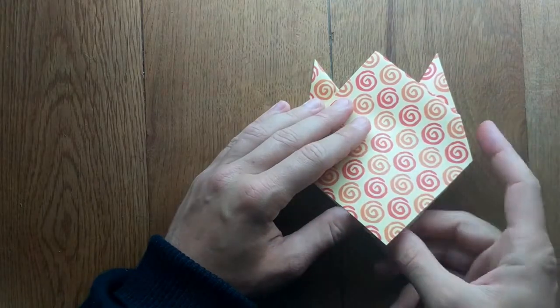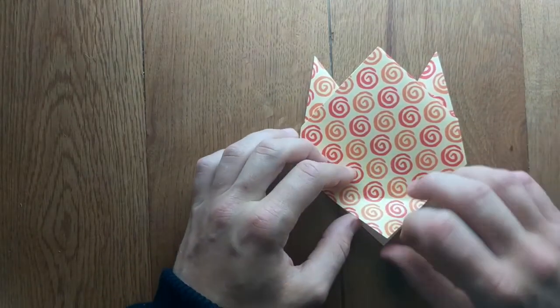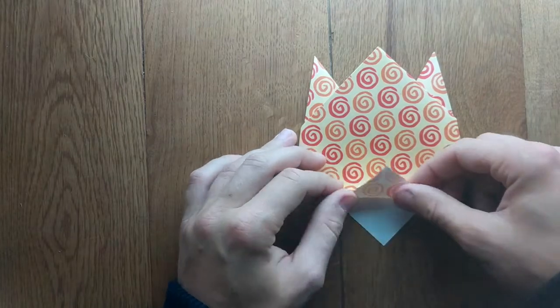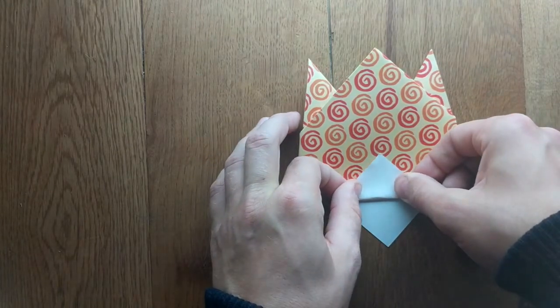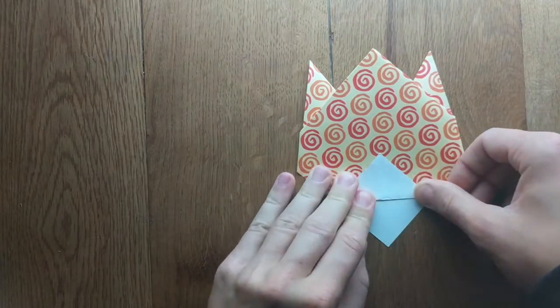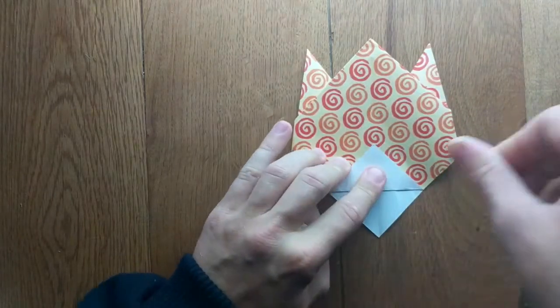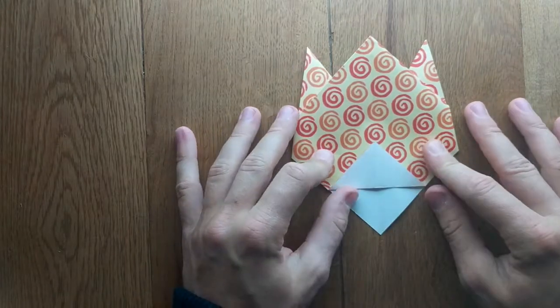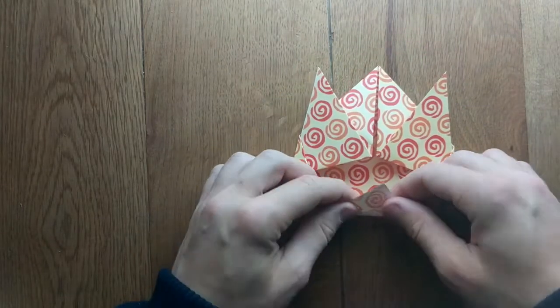Then you want to take this bit here. This will be in two parts, and you want to take the front triangle and fold that up.